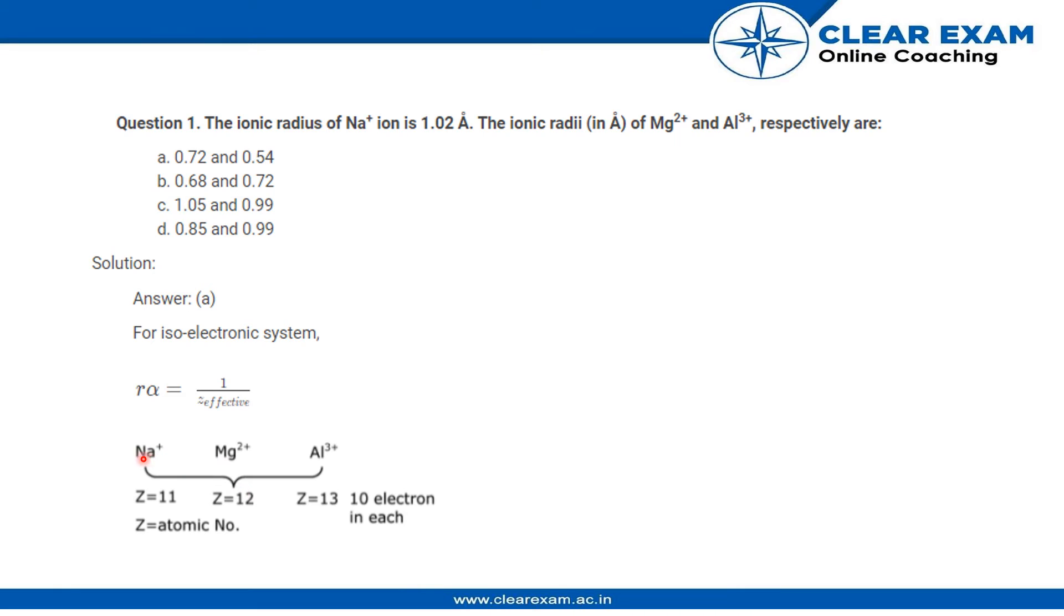For Na+, Mg2+, and Al3+, the effective atomic numbers are 11, 12, and 13. Therefore, the radius is inversely proportional to the effective atomic number. So aluminium size will be the smallest since it has the biggest atomic number.